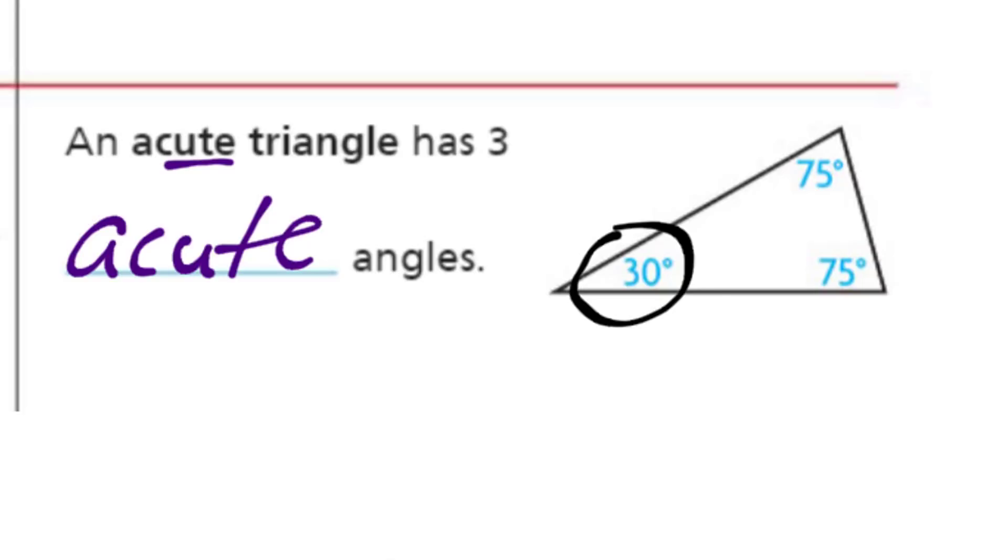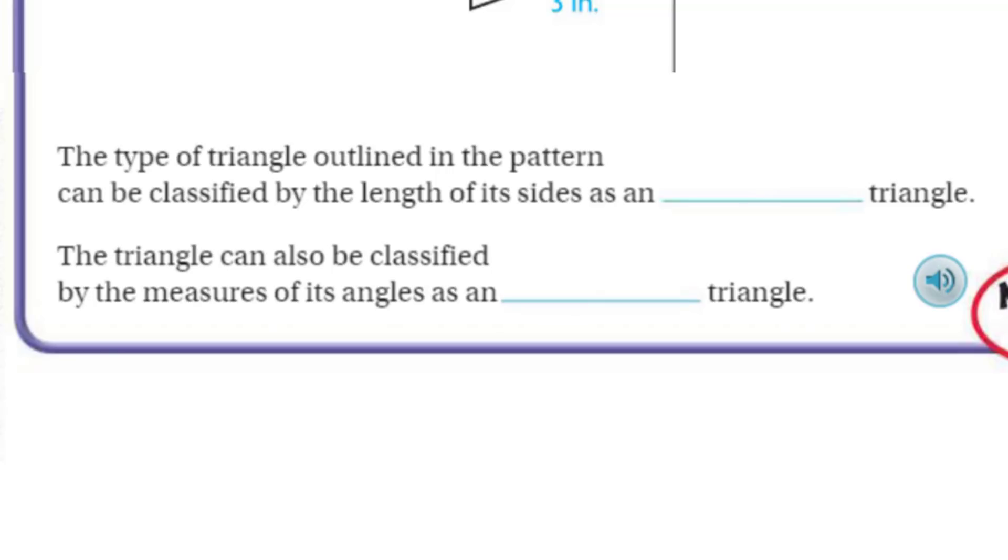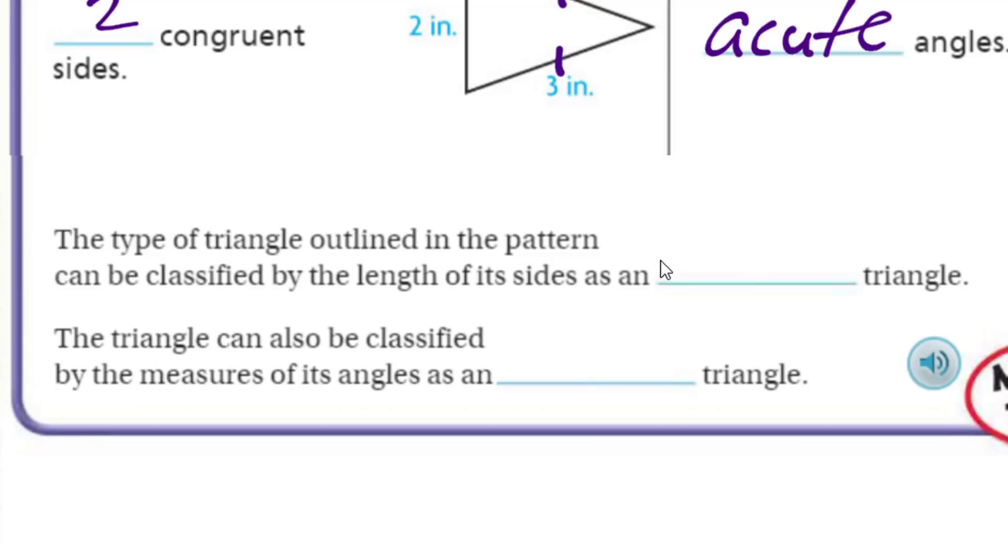Does this type of triangle outlined in the pattern can be classified by the length of its sides as blank? The one that we saw in the pattern there, you can see that all the sides are equal and they're congruent and the angles are congruent. So that has to be an equilateral.